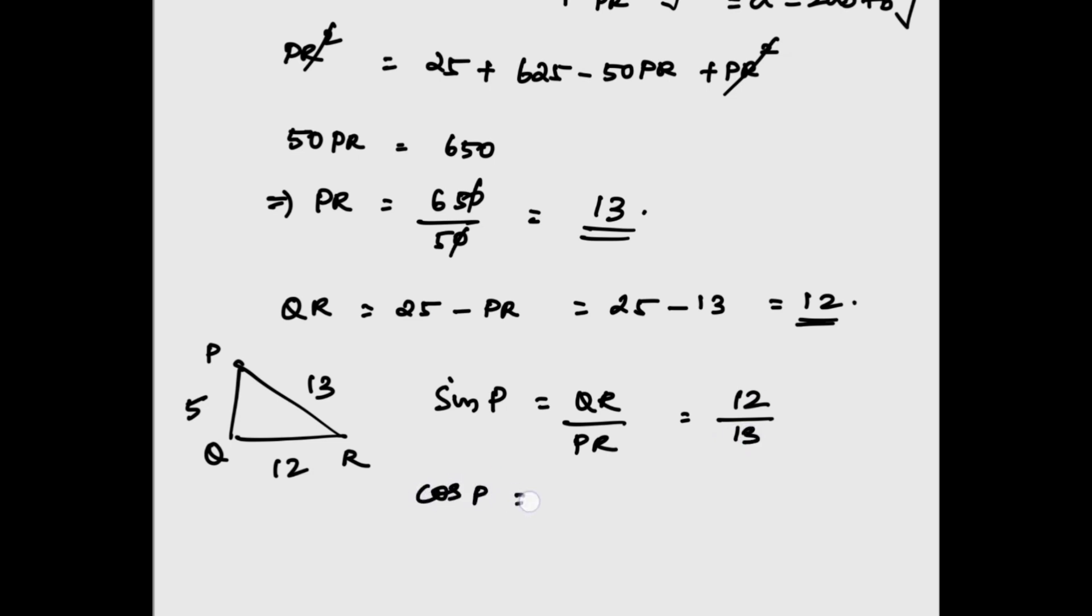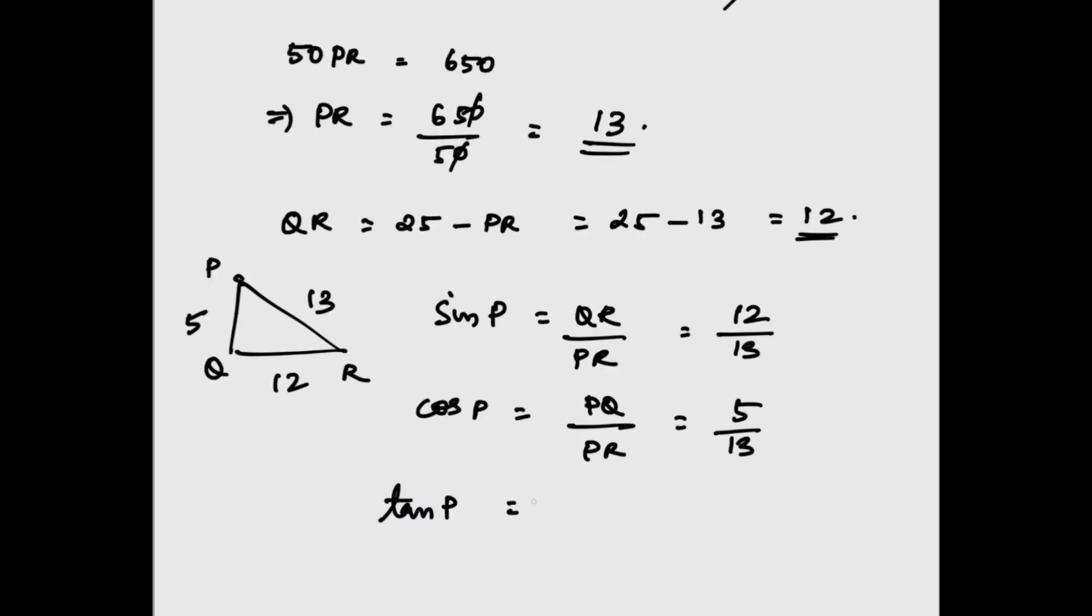Cos P = adjacent/hypotenuse = PQ/PR = 5/13. Tan P = opposite by hypotenuse, that is QR/PQ = 12/5. Thank you.